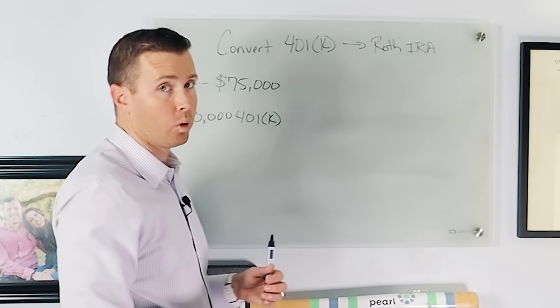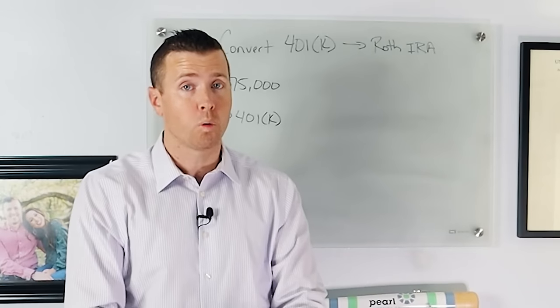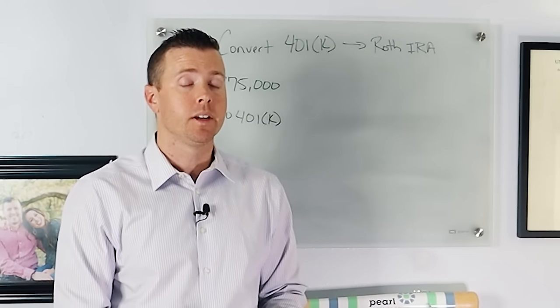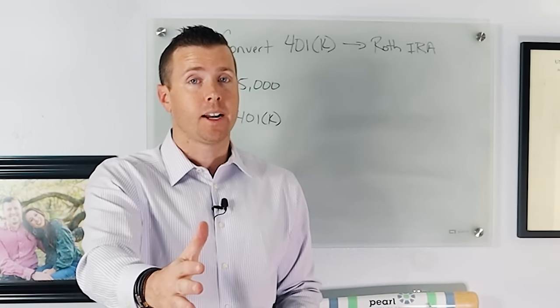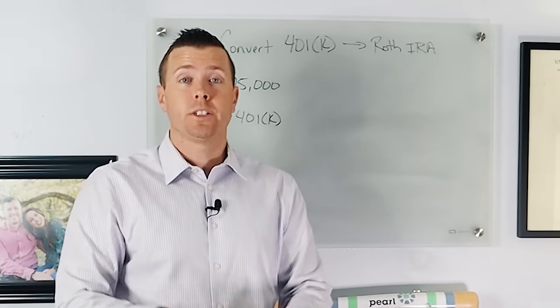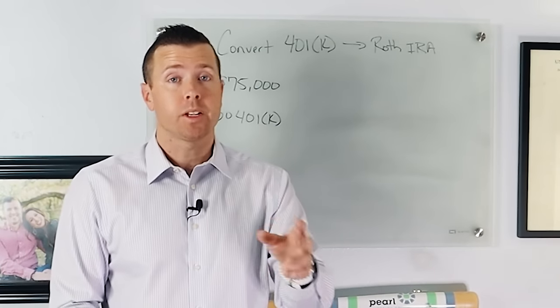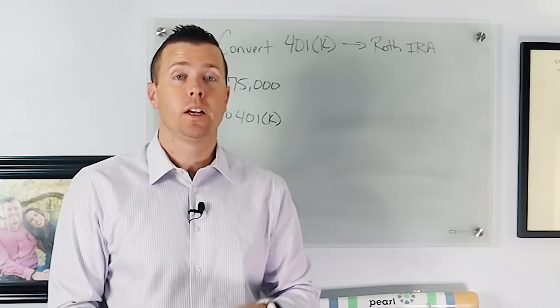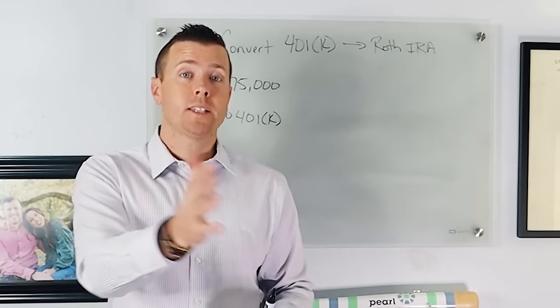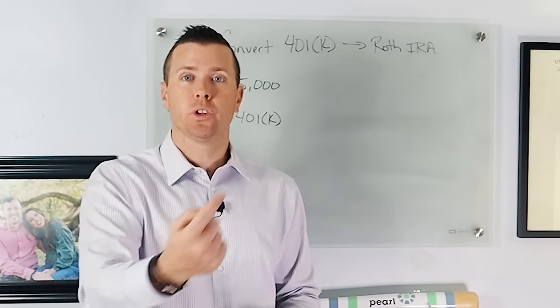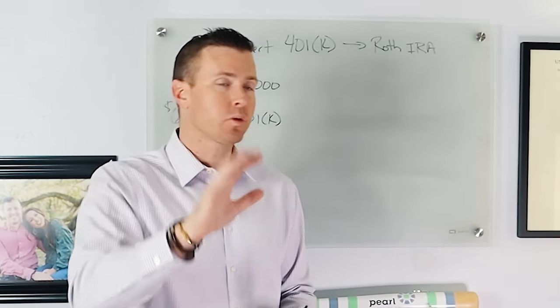If it's your current 401k, you can't pull any money out of it until you're over the age of 59 and a half. And once you get over the age of 59 and a half, then as long as your plan admin allows it, you might be able to do one-time rollovers, and then we can do what we're about to do on the board. So here's what I want you to think about.